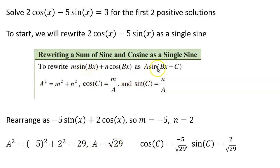And then to find c, the cosine of c is m over a, so negative 5 over root 29. And sine of c is n over a, so 2 over root 29. And again, both of these are important because they help us identify the quadrant of the solution. So let's focus on this part for a second.